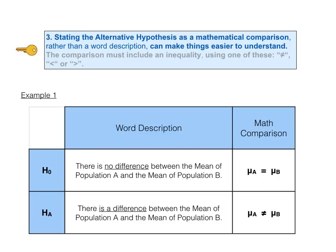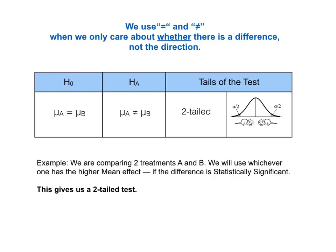The first part of key to understanding number 3 says, stating the alternative hypothesis as a mathematical comparison rather than a word description can make things easier to understand. Here are the mathematical comparisons for the null and alternative hypothesis, for example 1, on the previous page. We start with the null hypothesis and describe that with an equals sign. Then the alternative hypothesis uses a not equals sign. Sometimes we only care about whether there is a difference, change or effect, and not the direction.